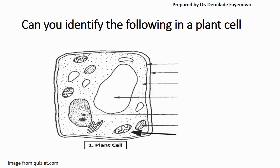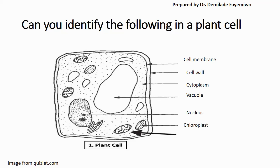Doing the same activity for the plant cell, you can see over here this is the cell membrane. The cell membrane is the inner membrane of the plant cell, while the cell wall is the outer membrane. The cell wall is important for rigidity and support — it keeps the plant cell from bursting and retains its structure even when it takes up water. That's the cytoplasm where all the organelles are contained. The big vacant space is the vacuole. You have the nucleus with some material in it, the chloroplast, and the mitochondria with the inner folded membrane.